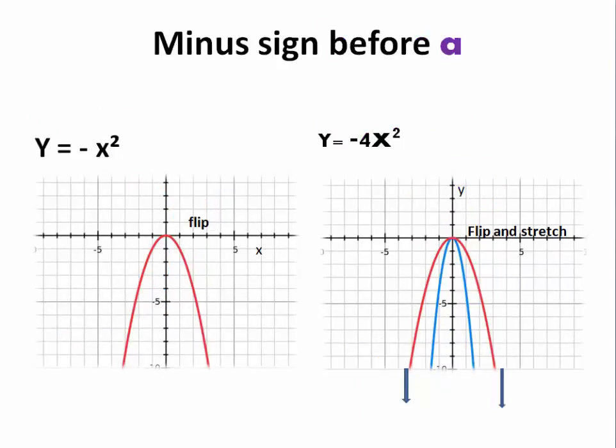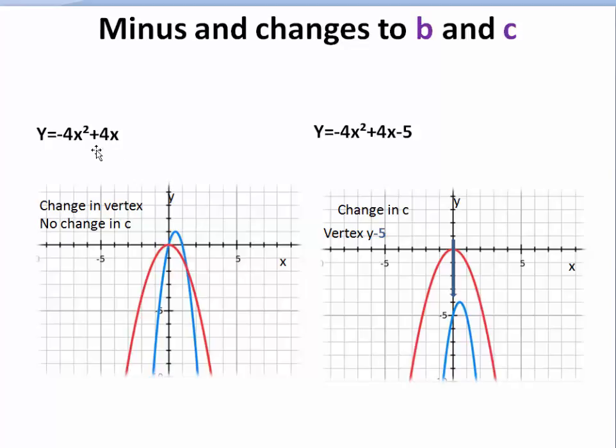The minus sign before the a or before the variable flips the parabola in the x axis. So this is minus x squared. This is minus 4x squared where the flipped parabola has been stretched and the slope becomes steeper. Minus 4x squared plus 4x. The b changes the vertex. And finally the c minus 5. We go down the y axis by 5 units.